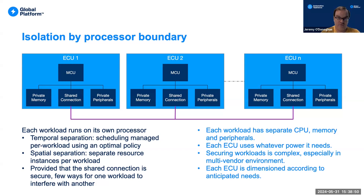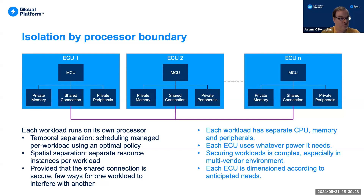Because each workload is in its own processor, the processor can be made sufficiently powerful to run the workload and have enough memory. Generally everything is optimal except cost. One area where isolation may be a problem is the shared connection: you might want to ensure that messages over the bus are authenticated and integrity protected, which has often been a weakness of this type of system. You also need to make sure there is sufficient bandwidth on that bus for safety use cases. Securing these systems becomes difficult in a multi-vendor environment.